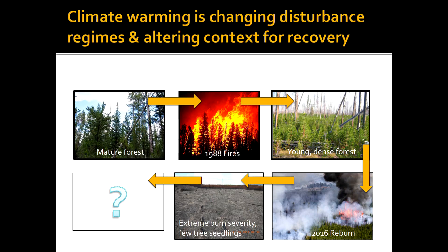Just one example: in Yellowstone, where I work, climate warming is already changing the fire regime and altering the context within which the system recovers. The mature forests typically burn every 100 to 300 years — documented by Kathy Whitlock over the Holocene record. Even the big Yellowstone fires of 1988 were something the system was well adapted to; it has a stand-replacing fire regime and recovers with young, dense forests. However, fires are now starting to recur at less than 30-year return intervals, producing areas with such high burn severity that there's very little legacy left in the system.